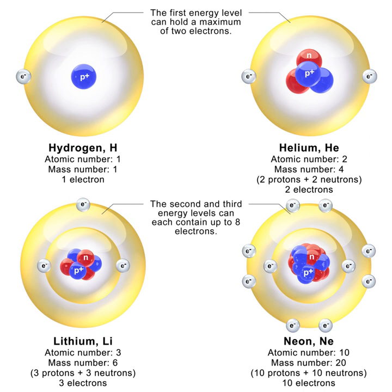The neutron is a subatomic particle, symbol n or n0, with no net electric charge and a mass slightly larger than that of a proton. Protons and neutrons constitute the nuclei of atoms. Since protons and neutrons behave similarly within the nucleus and each has a mass of approximately one atomic mass unit, they are both referred to as nucleons.